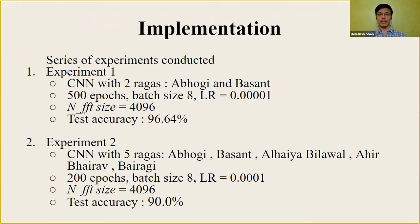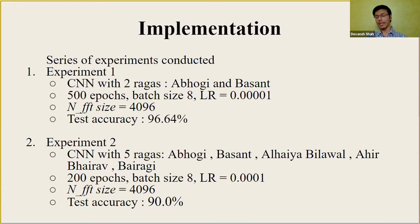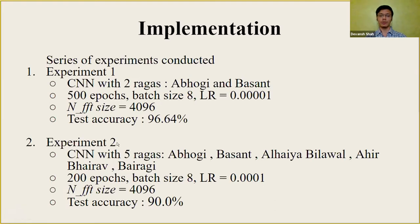We conducted a set of experiments. The dataset has a total of 30 classes — 30 Ragas — with 10 audio files per class from various artists and styles. We convert audio files to spectrograms and split them into train/test/validation at 80/10/10. In experiment one, we considered only two Ragas and trained the CNN, achieving a test accuracy of 96.64%. In experiment two, we extended to five Ragas to see how well it scales, and the test accuracy was 90%.